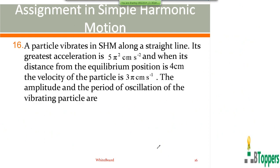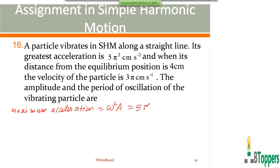See the next question, question number 16. A particle vibrates in simple harmonic motion along a straight line. Its greatest acceleration is 5π² centimeter per second squared. When it is at a distance of 4 centimeters from the equilibrium point, the velocity of the particle is 3π centimeter per second. Find the amplitude and period of oscillation.